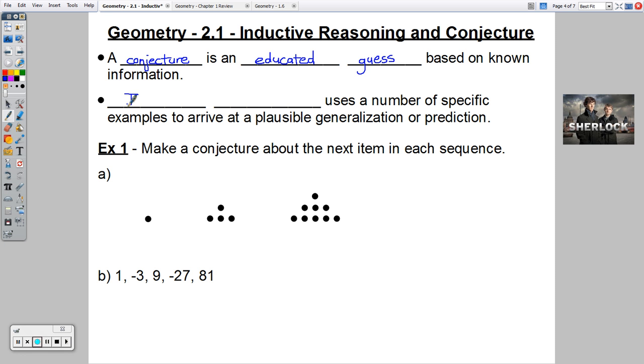This set of blanks should say Inductive Reasoning. Inductive Reasoning uses a number of specific examples to arrive at a plausible generalization or prediction. Sherlock doing inductive reasoning a lot - he'll gather all these clues and arrive at a plausible generalization. Let's do some Inductive Reasoning in example one.